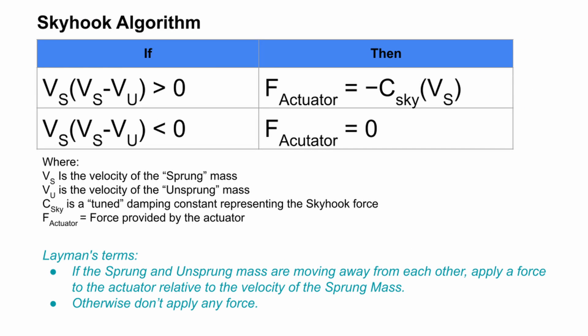This slide shows the actual algorithm for sky hook. Simply stated, if the sprung and unsprung masses are moving away from each other, we need to apply the force via the actuator proportional to the delta of the velocity of the sprung and the unsprung masses. Otherwise, if the masses are moving towards each other, we won't apply any actuator force.